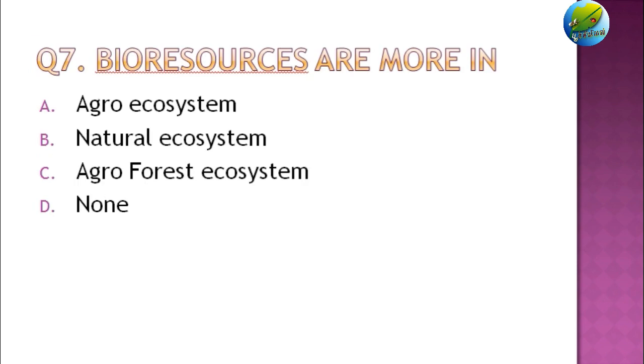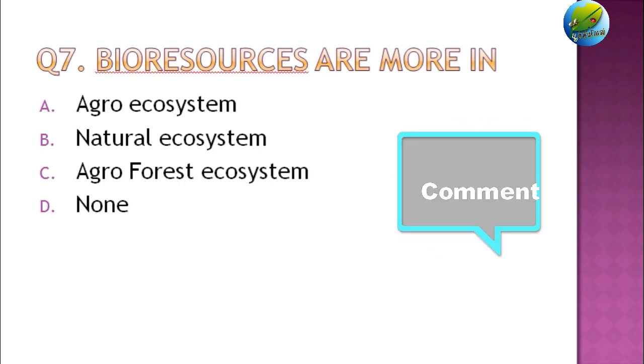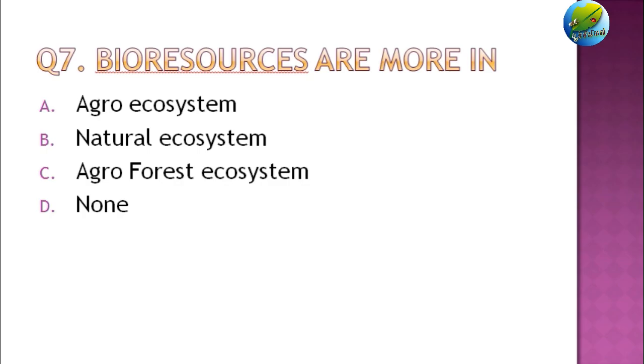Seventh: Bio-resources are more in — agro-ecosystem, natural ecosystem, agro-forest ecosystem, or none of the above? Comment the right answers below.